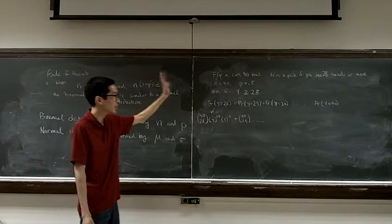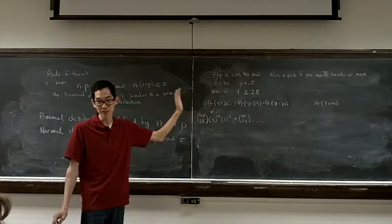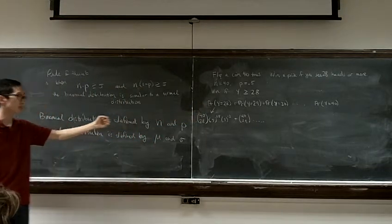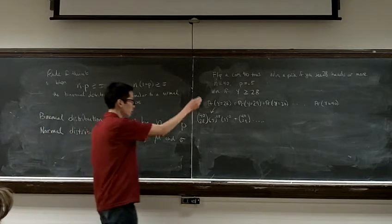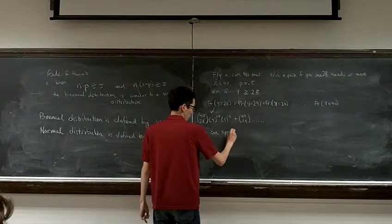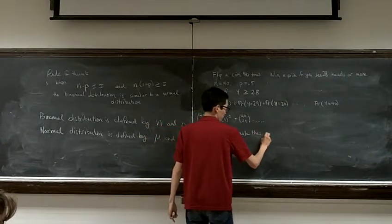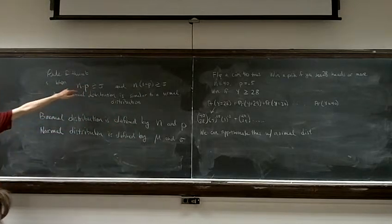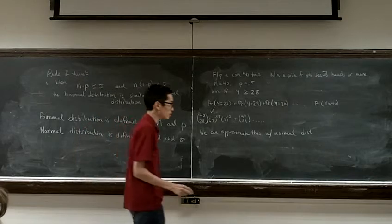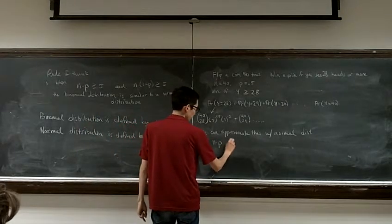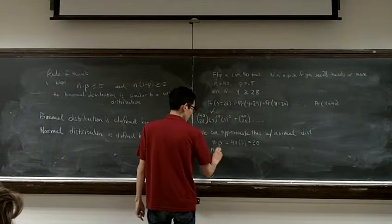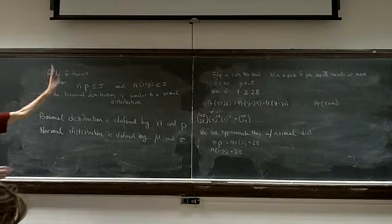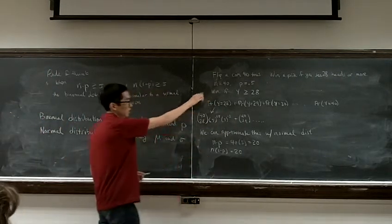So we have a couple options. One is we could ask the computer to do it. A computer can do this rather quickly. Or we can approximate it with a normal distribution. And so that's what we're going to do. And again, just to check our rule of thumb to make sure that it is reasonable to use the normal distribution, we do n times p, and we get 40 times 0.5 is equal to 20. And we get n times 1 minus p, and we also get 20 there. So both of those numbers are bigger than 5. So this says we are okay to approximate this situation with a normal distribution.